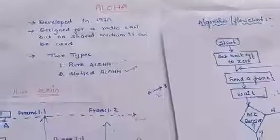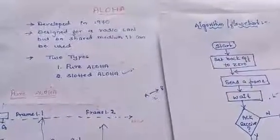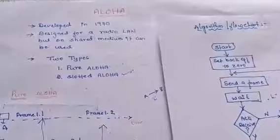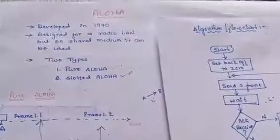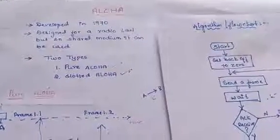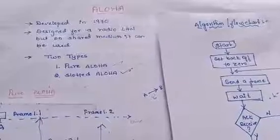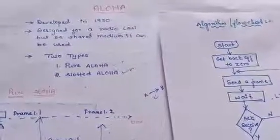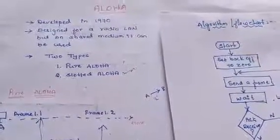Good evening students. In the last class, we discussed different types of multiple access control protocols. Today, we will discuss one of the random access control protocols, the ALOHA protocol.